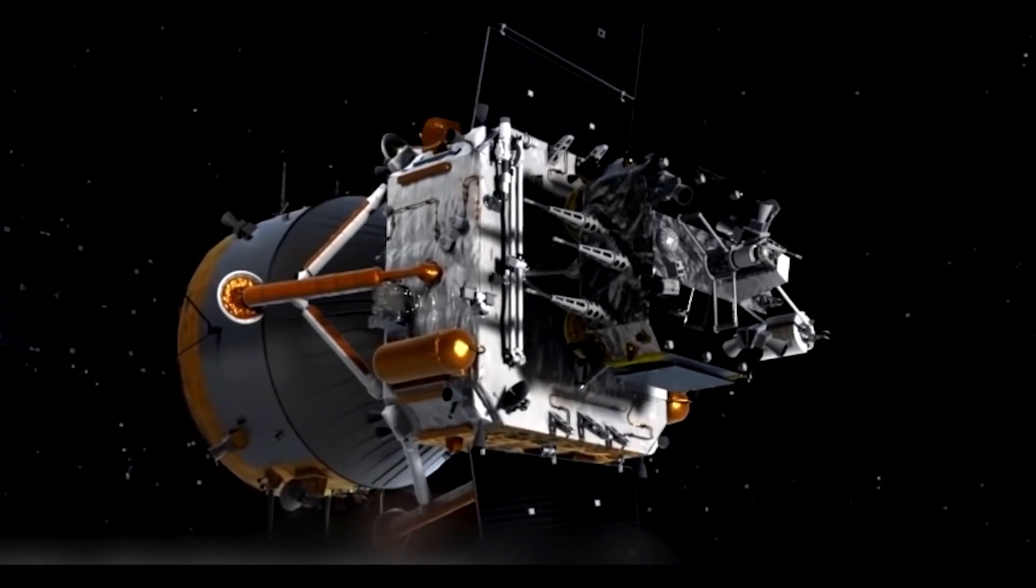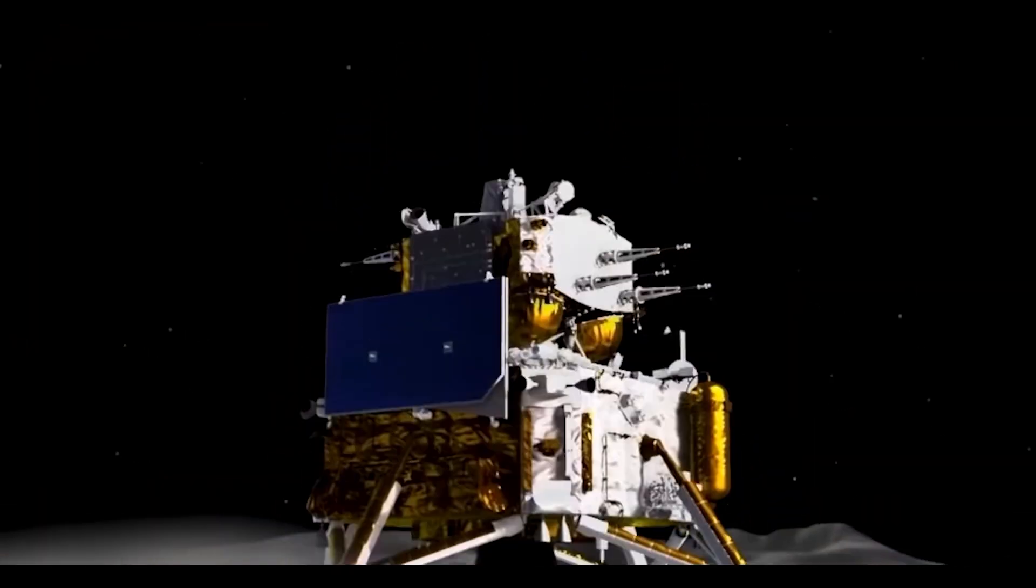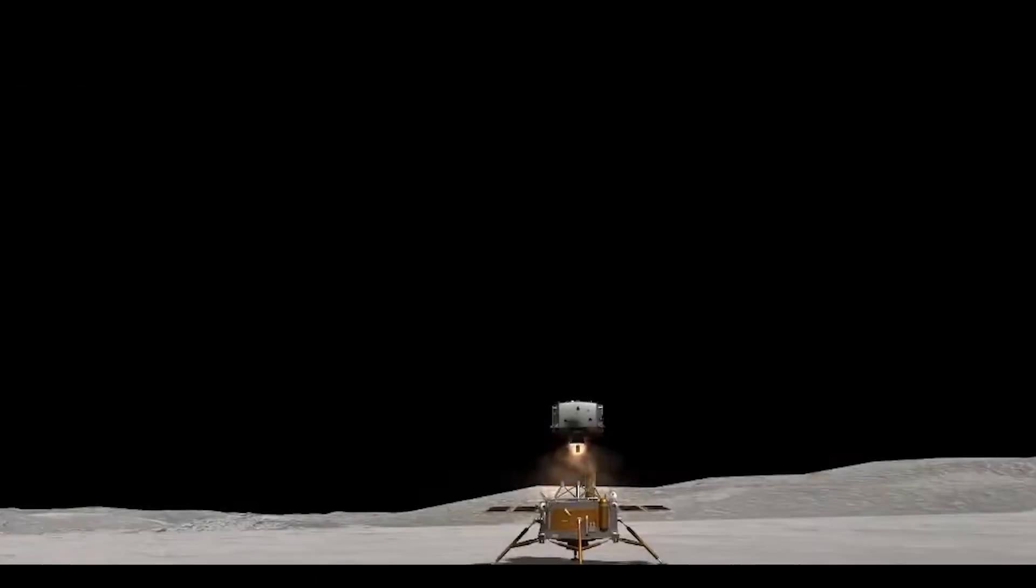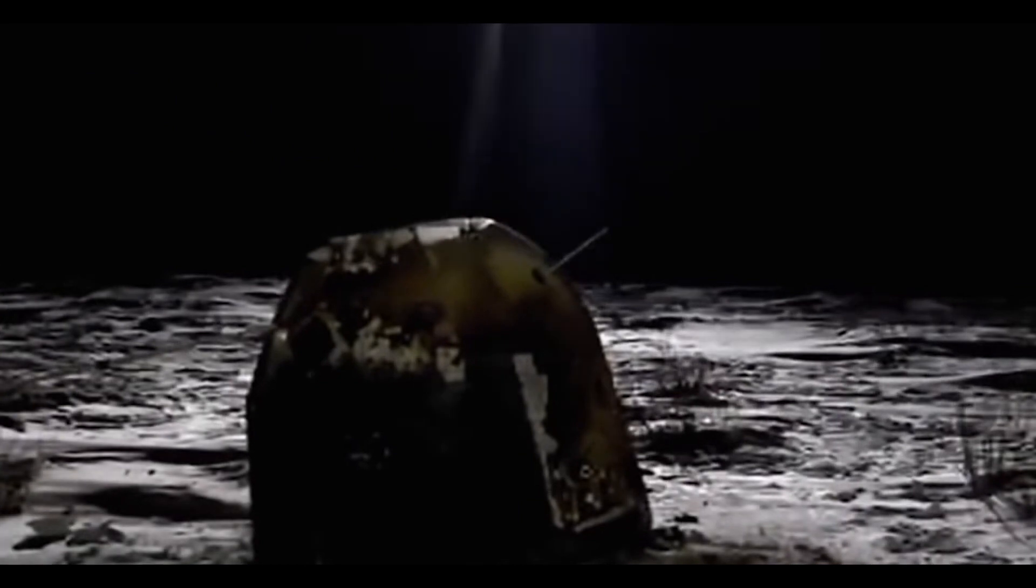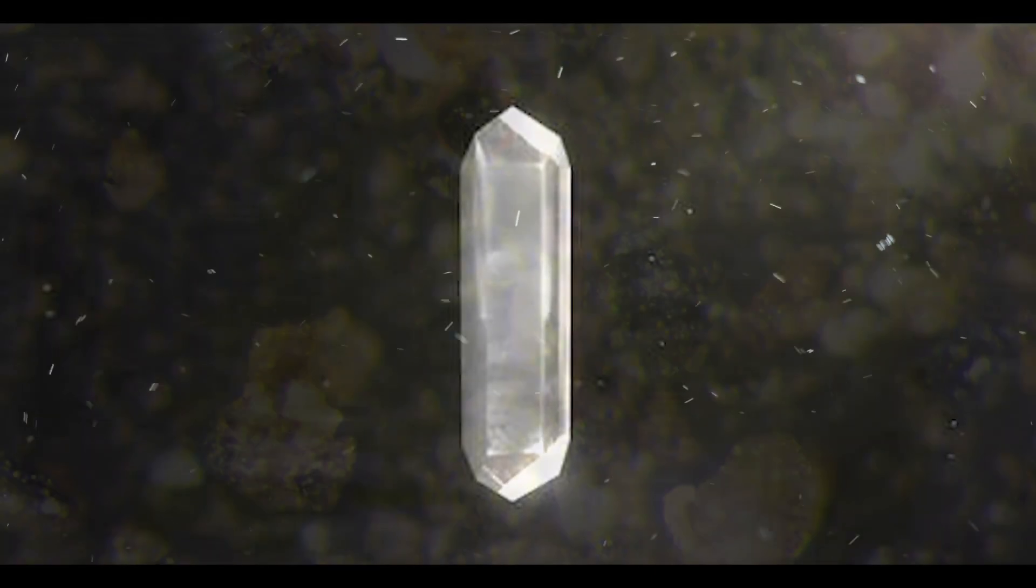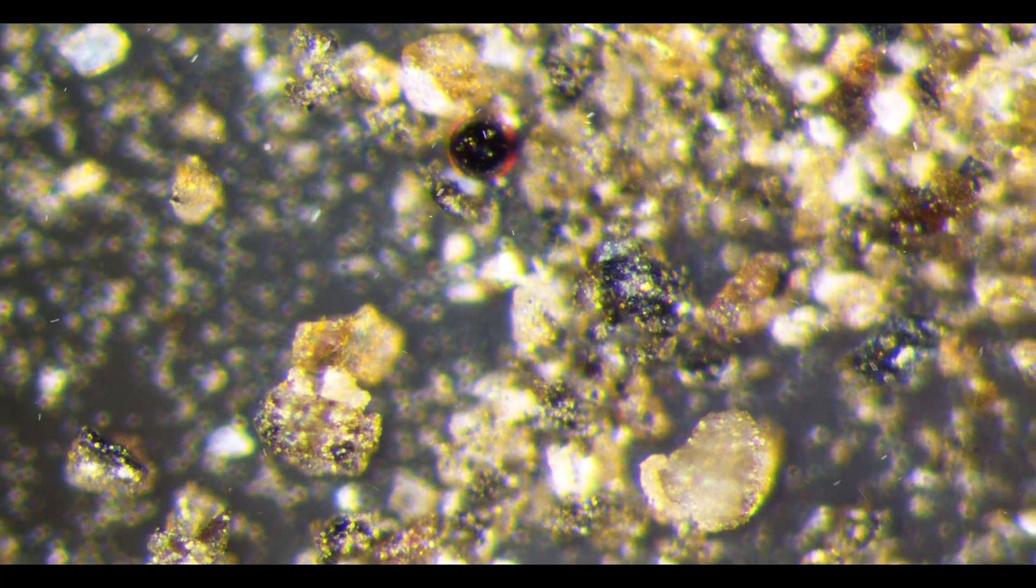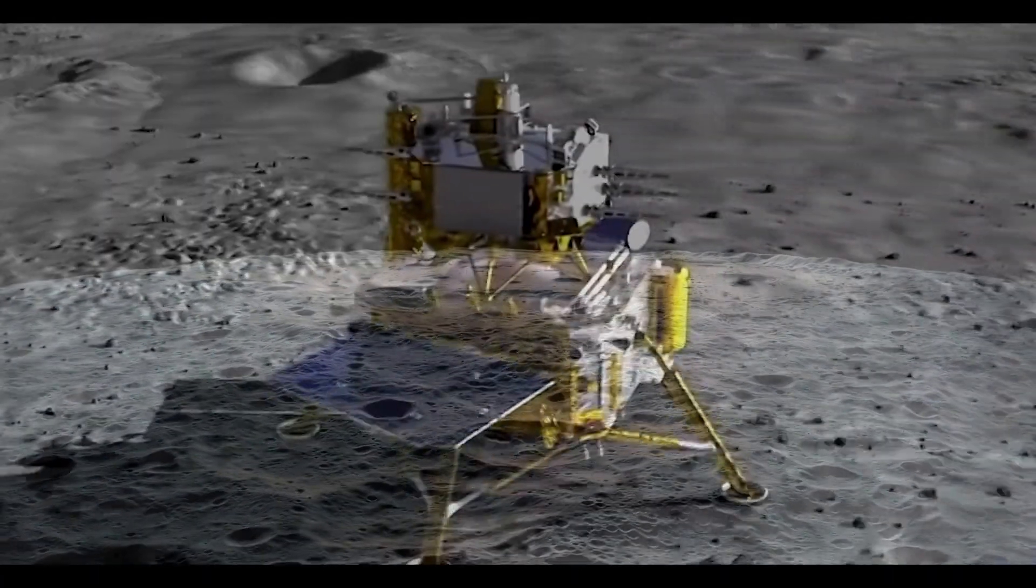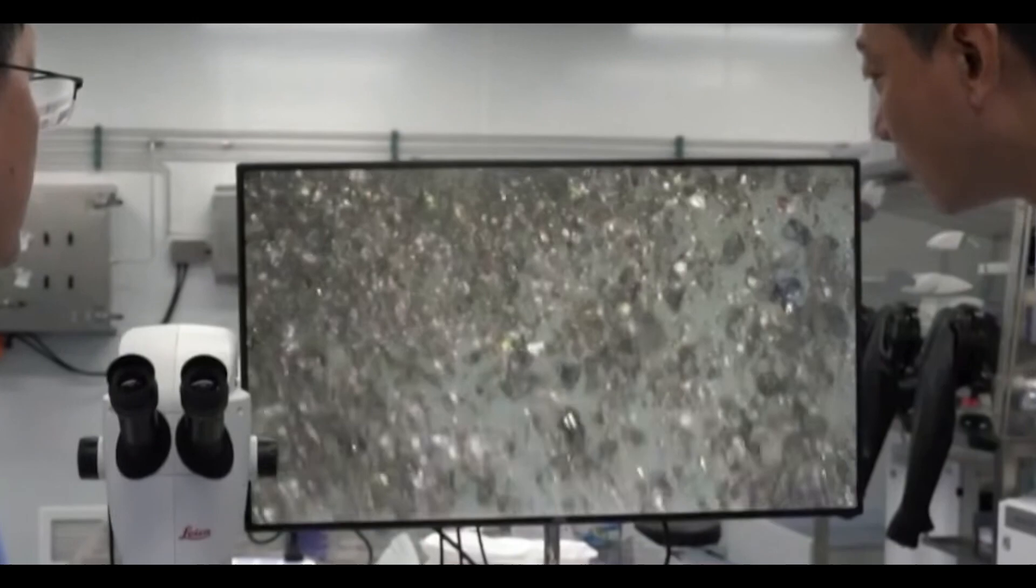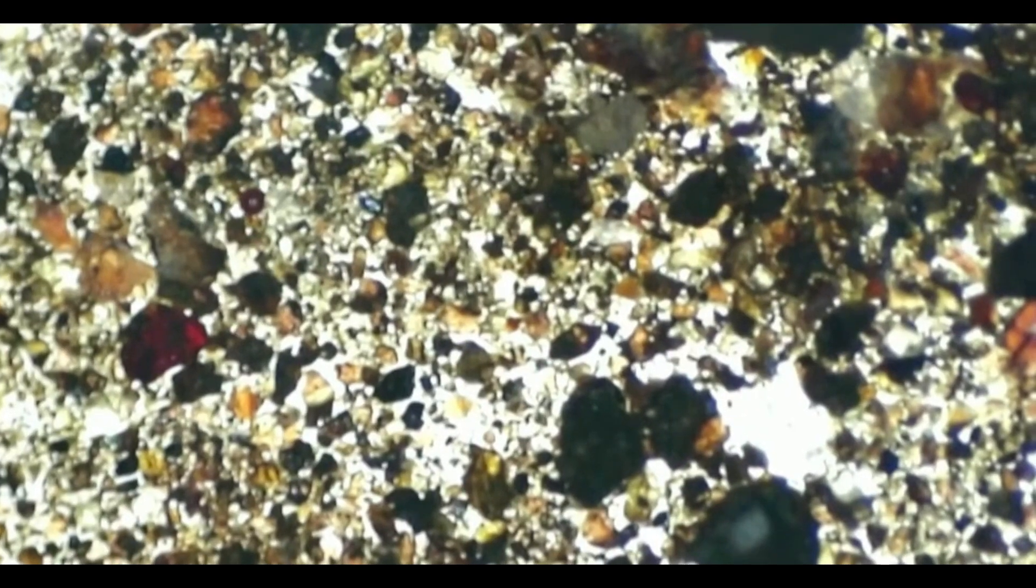The China National Space Agency's Chang'e-5 mission landed on the moon and collected 3.8 pounds of lunar material, then returned to Earth with those samples, making the first retrieval of moon material since the 1970s. Chinese scientists discovered this single crystal of a new phosphate material while analyzing lunar basalt particles which were collected from the lunar surface two years ago. The team successfully isolated a single particle of the new moon mineral from more than 14,000 other particles in their sample.